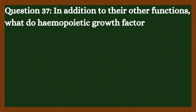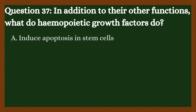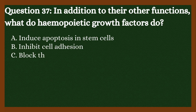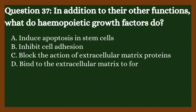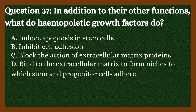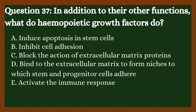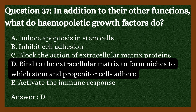Question 37: In addition to their other functions, what do hemopoietic growth factors do? A. Induce apoptosis in stem cells. B. Inhibit cell adhesion. C. Block the action of extracellular matrix proteins. D. Bind to the extracellular matrix to form niches to which stem and progenitor cells adhere. E. Activate the immune response. Answer is D. Bind to the extracellular matrix to form niches to which stem and progenitor cells adhere.